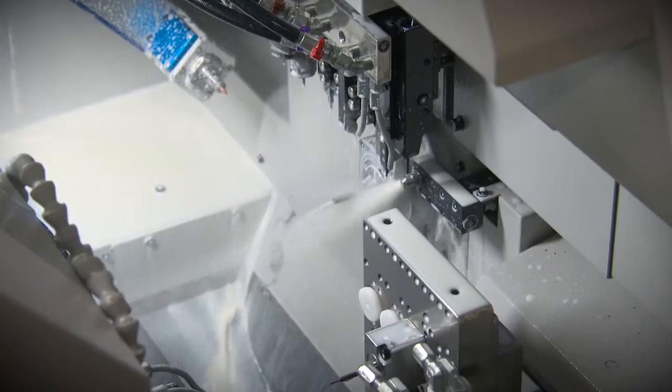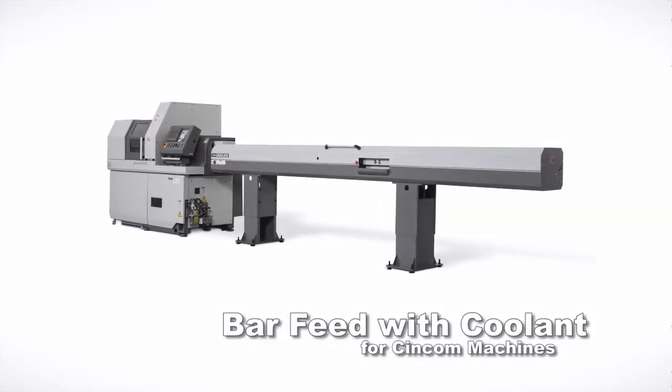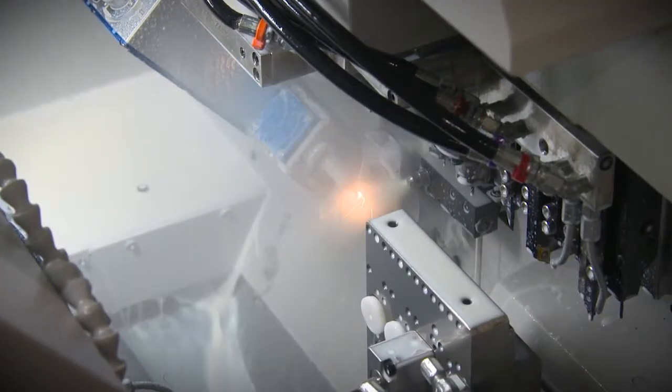High pressure coolant that is used during the cutting process also feeds coolant through the tubing material in the auto loading bar feed system. This provides a flushing of dross or chips that are created during the laser cutting process.